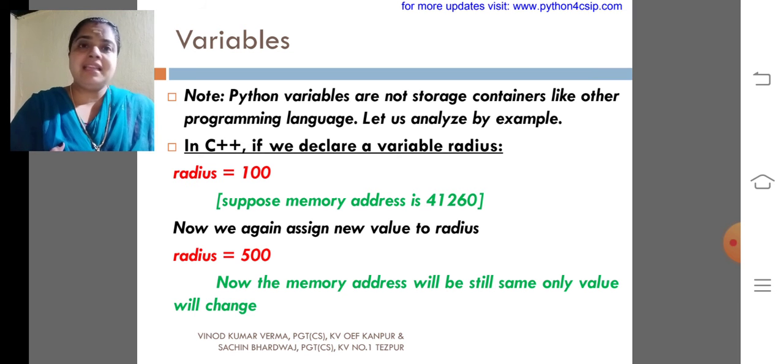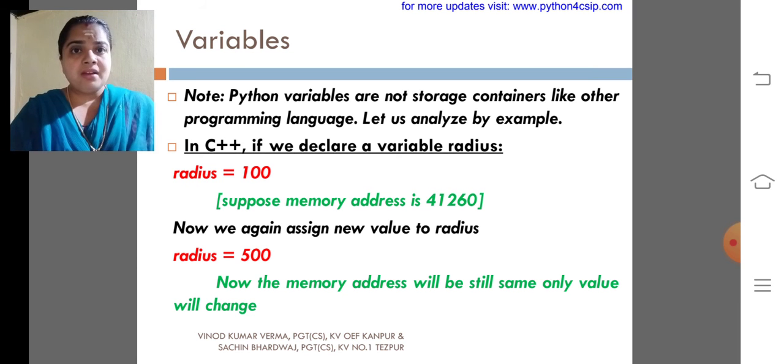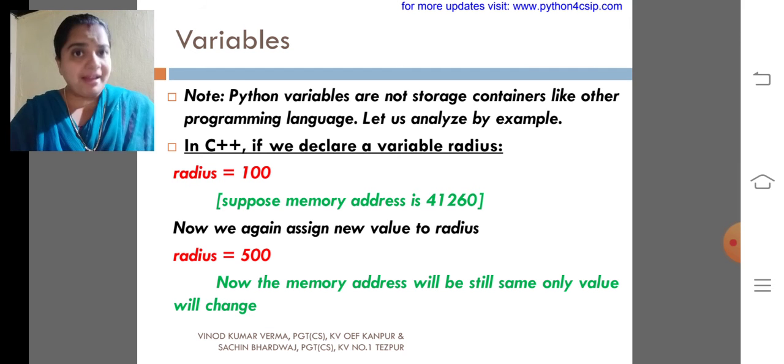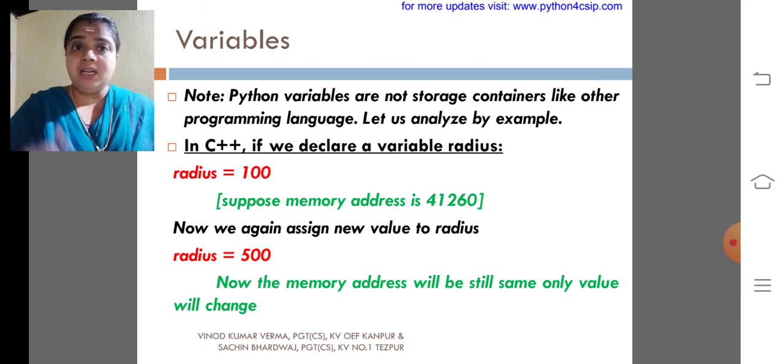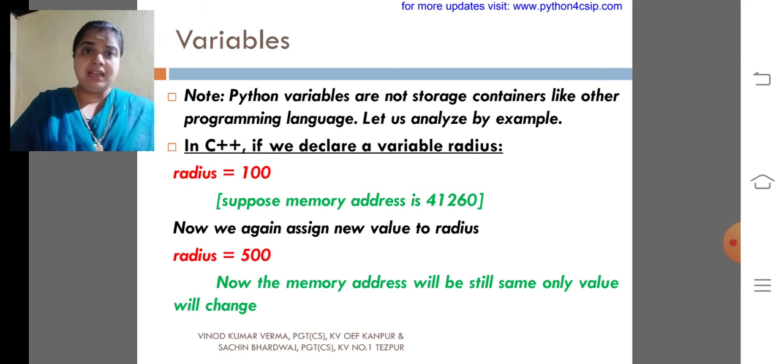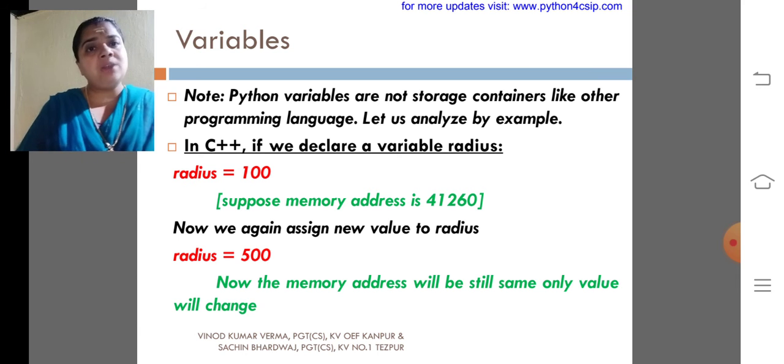It is difficult to recollect the memory address. That is why we are using a variable. That is, if we are using phone numbers, we are saving with the name. Why? It is easy to recollect, it is easy to use. But it is difficult to remember the phone numbers. In a similar way, the variable storage is also like that.